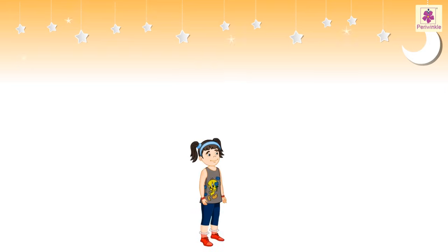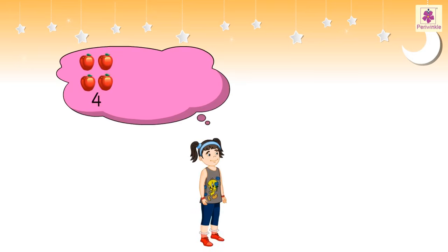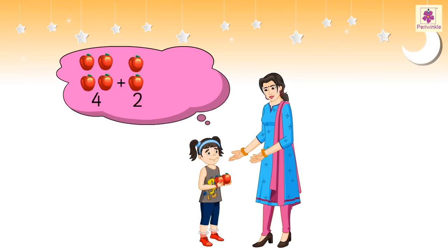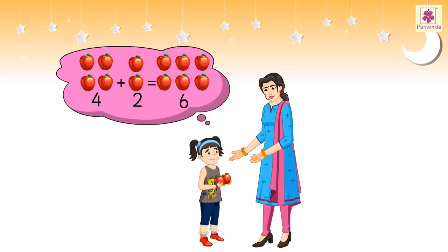Neha has four apples. Mummy gives her two more. How many apples does Neha have now? Four plus two is equal to six. Neha has six apples in all.